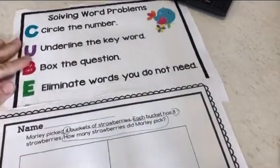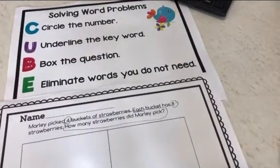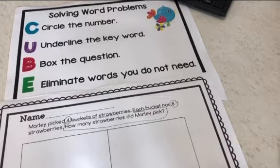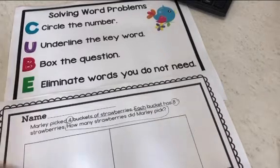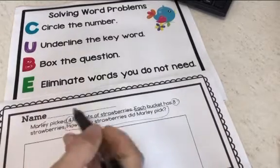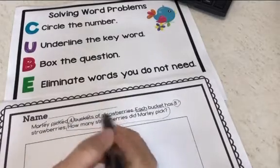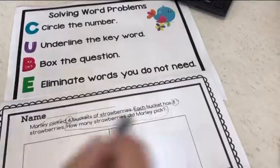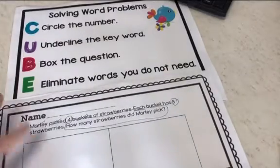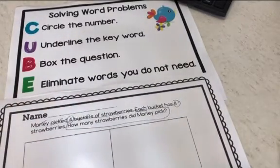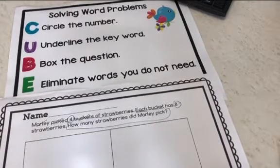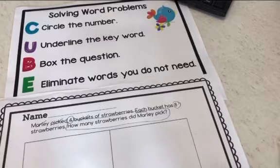Next, we're going to eliminate words that they do not need. I will say to them, is 'Marley' really important? If I see the word Marley, do I know if I have to add, subtract, or multiply? So we go through word by word — what is really important in this story? They start taking words away so that they have numbers, a keyword, and whatever item is in the word problem, like elephants or pigs, or in this case, it's strawberries.